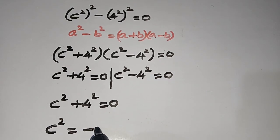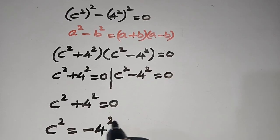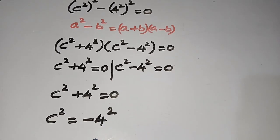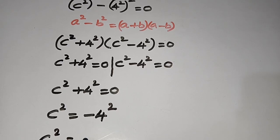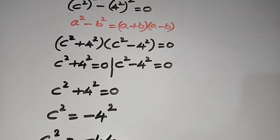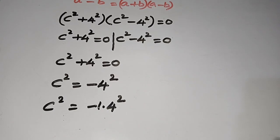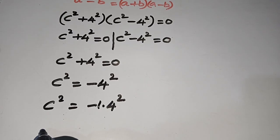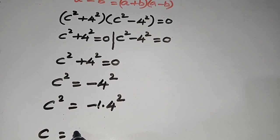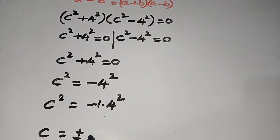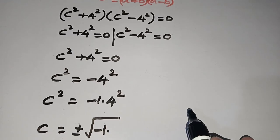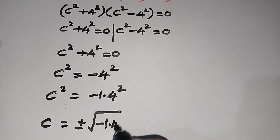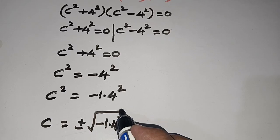We can write c² = -1 times 4². If we want c, then c = ±√(-1) times √(4²), which is ±√(-1) times 4.